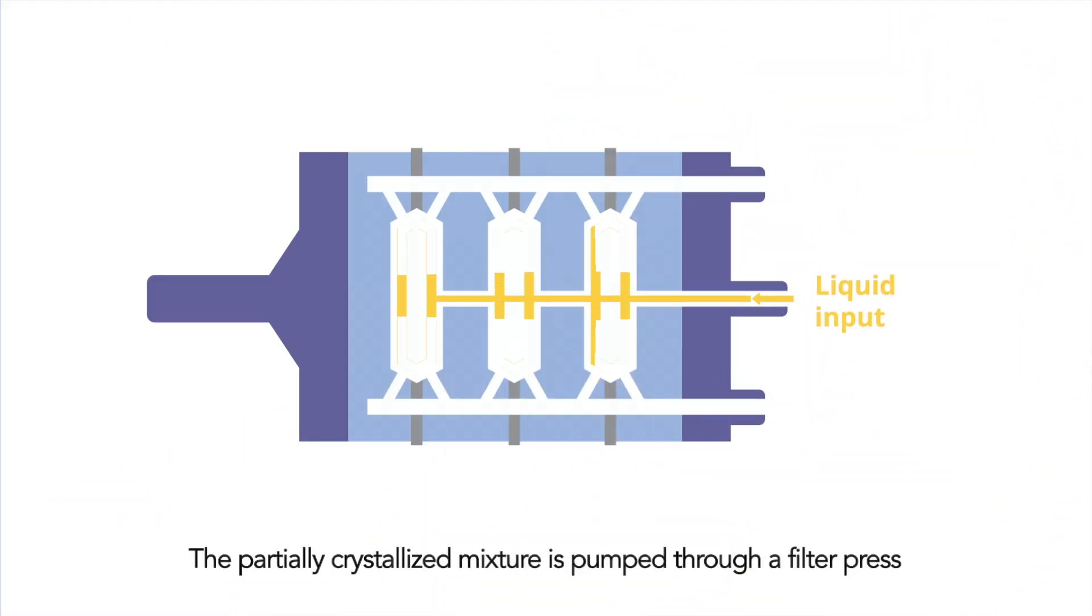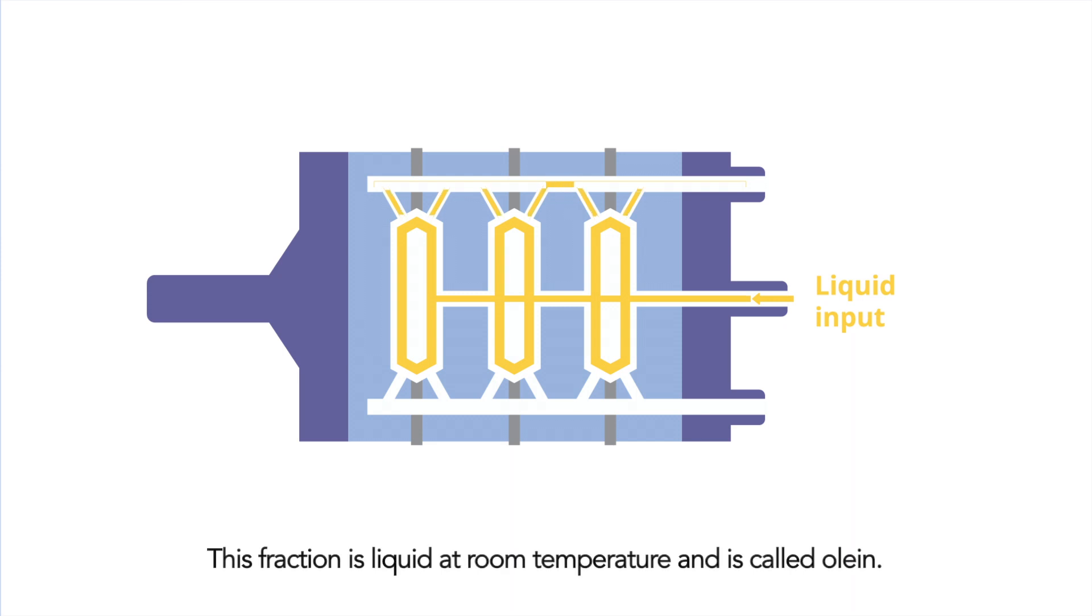The partially crystallized mixture is pumped through a filter press to separate the liquid and solid fractions. The liquid fraction is pumped out of the filter press. This fraction is liquid at room temperature and is called olein.